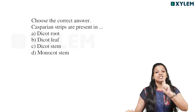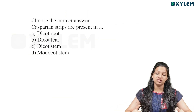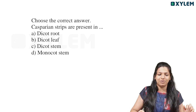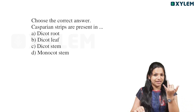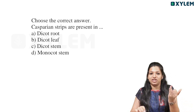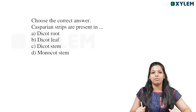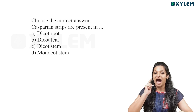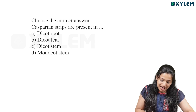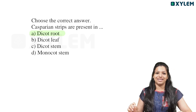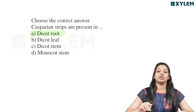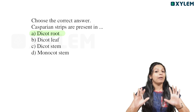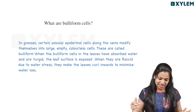Choose the correct answer. Casparian Strips are found in — how are we going to answer that? They are found in the Endodermis. We are learning about Casparian Strips in the dicot root. The answer is Endodermis. That is a good answer.